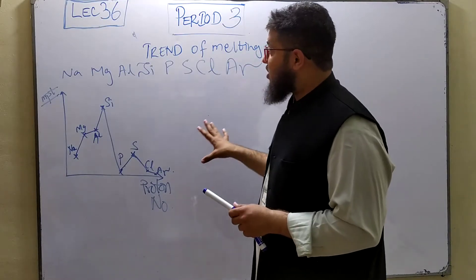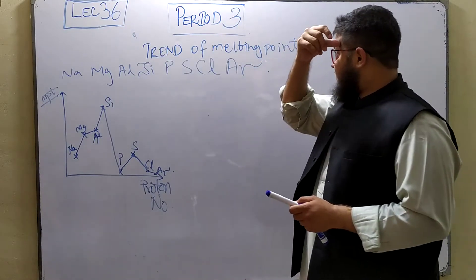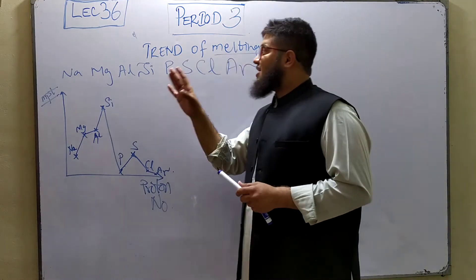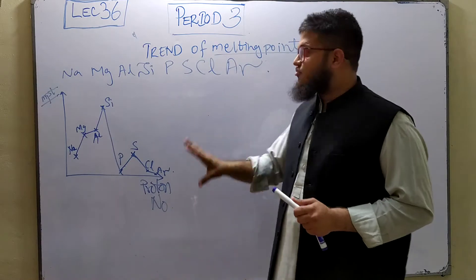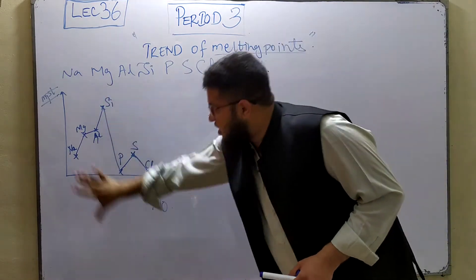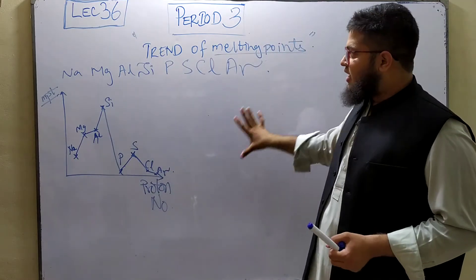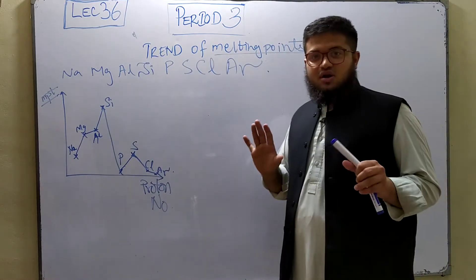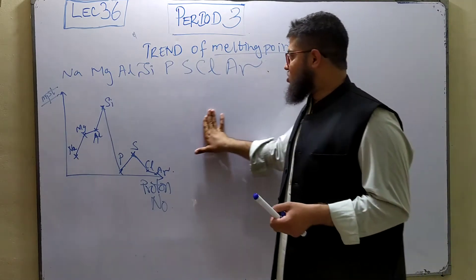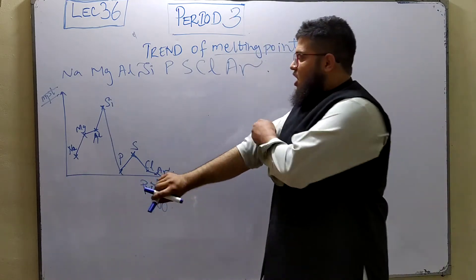Assalamualaikum guys, welcome. So now we are going to talk about a very important section of Period 3, which is the trend of melting points of all these elements. This is a very high yield topic — literally a very high yield topic, because you will find only from this diagram you can find like five questions. These are not one-mark questions; rather, three to four mark questions.